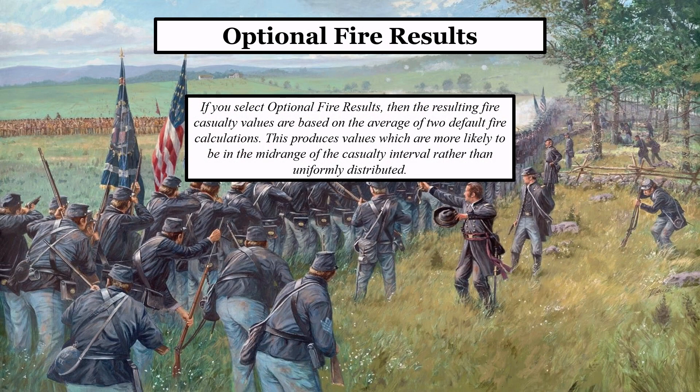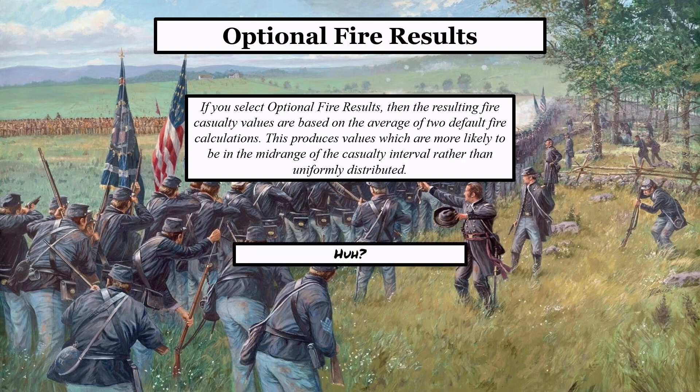Optional fire results: if you select optional fire results, then the resulting fire casualty values are based on the average of two default fire calculations. This produces values which are more likely to be in the mid-range of the casualty interval rather than uniformly distributed. That's a really confusing couple of sentences — to me it was one of those 'hey, what are they trying to tell us here?' sort of moments.